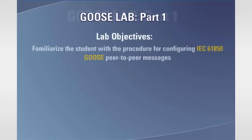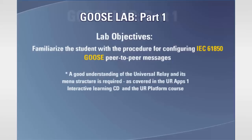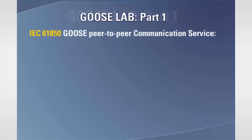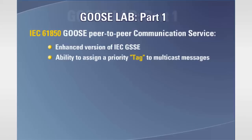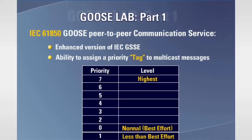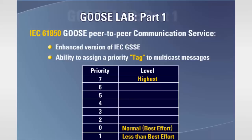The objective of this lab is to become familiar with the correct procedure for configuring the IEC 61850 GOOSE peer-to-peer messaging service. The IEC 61850 GOOSE peer-to-peer communication service is an enhanced version of the GSSE peer-to-peer service with the additional ability of assigning priority and what is called a tag to the multicast messages. The priority can range from 0 to 7. A priority value of 1 is the lowest level of priority. A priority value of 0 indicates the default priority, also referred to as best effort. Best effort has a higher priority than 1 and a lower priority than 2. The level of message priority increases as the value is increased from 2 to 7, with 7 being the highest priority.